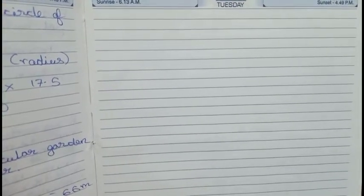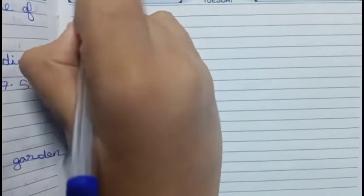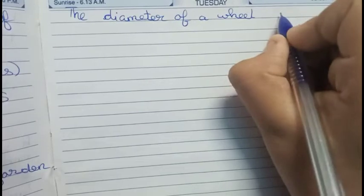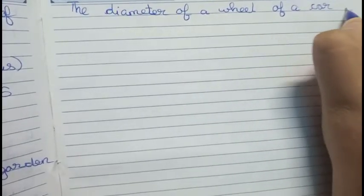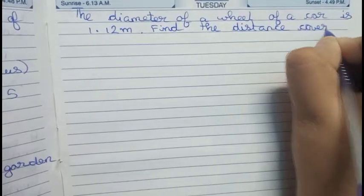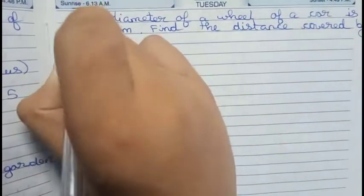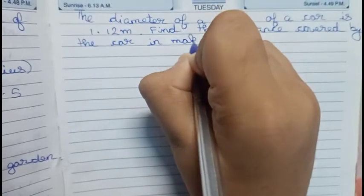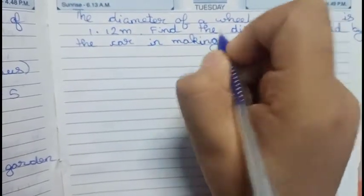Hello guys, welcome to this video. In this video our question is: the diameter of a wheel of a car is 1.12 meters. Find the distance covered by the car in making 500 revolutions by its wheels.